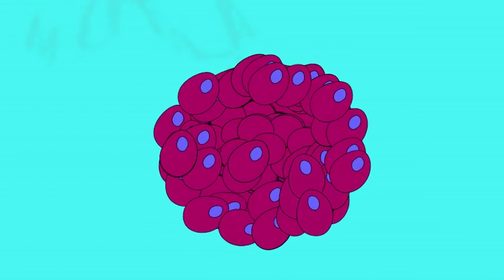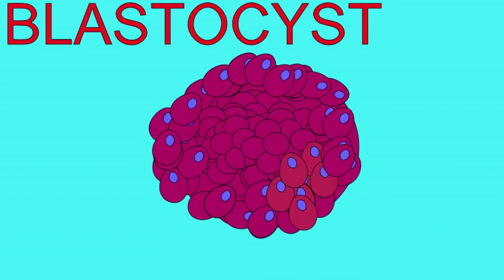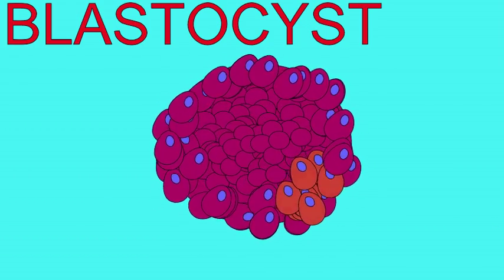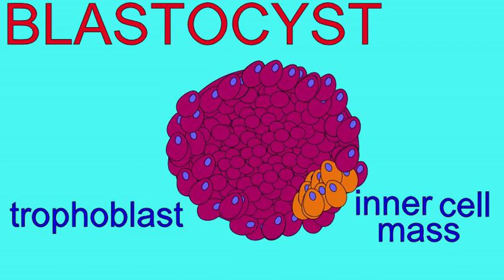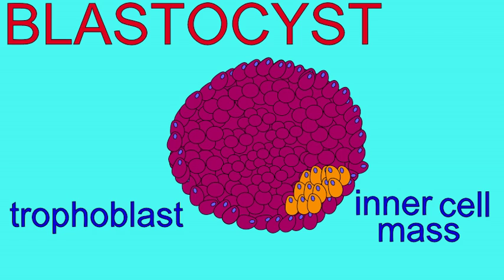By day 4 to 5, the embryo has passed through the oviduct and is arriving in the uterus, and has formed a hollow ball of cells known as a blastocyst. It is the blastocyst which implants into the uterine lining. The blastocyst consists of two types of cells: the inner cell mass, which will form the body of the embryo, and the outer trophoblast, which will form the extraembryonic membrane, the chorion.